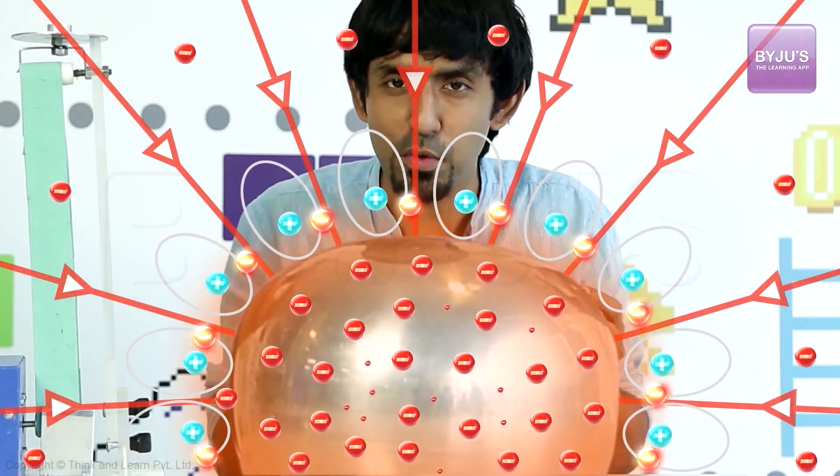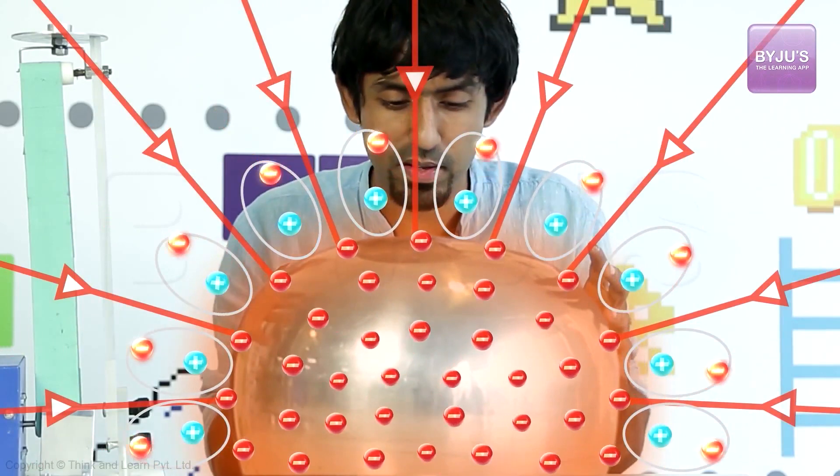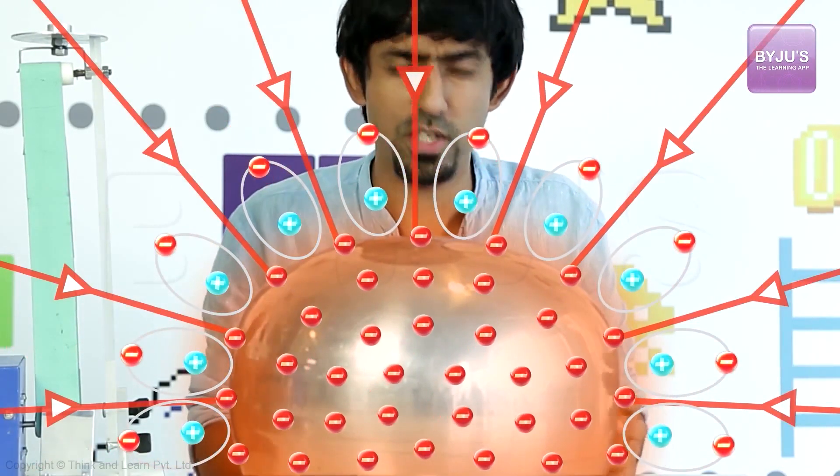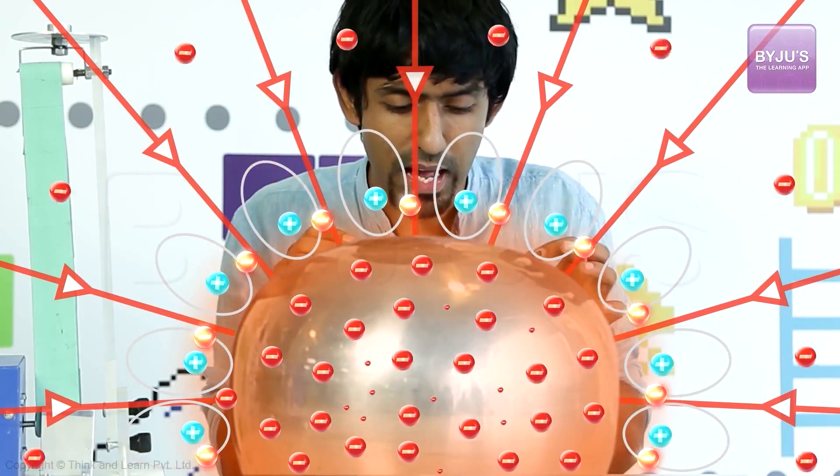Now, this spilling out of electrons into the atmosphere is called corona discharge. Corona discharge. Because after a point, the air around begins to get ionized.